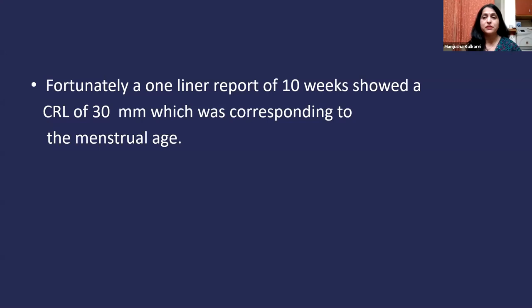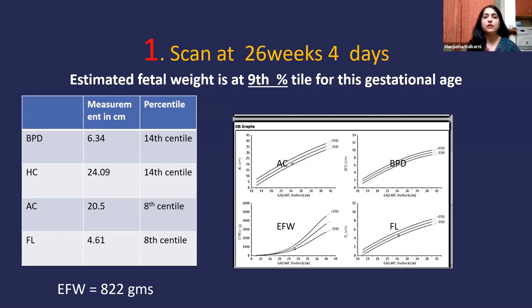Since there was a lag of 10 days in gestational age and clinically the fundal height was less, the patient was advised an early growth scan. She came to me for the first time at 26.4 weeks. Fortunately, there was a one-liner report from 10 weeks showing a CRL of 30mm corresponding to the menstrual age. At 26.4 weeks, BPD and HC were at the 14th percentile, while abdominal circumference and femur length were at the 8th percentile.